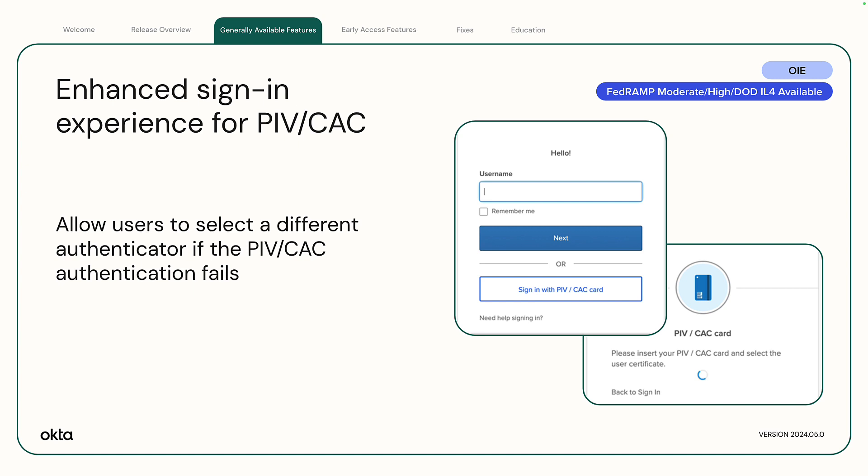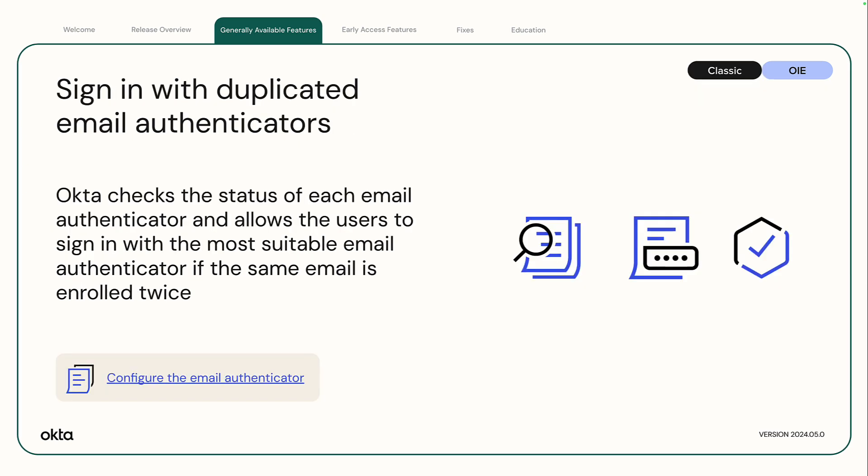Instead of forcing them to restart the sign-in process, if your org uses default error pages for PIV or CAC sign-in, the new experience is automatically enabled. If your org uses customized error pages for PIV or CAC sign-in, they are preserved. However, you need to contact support to switch to the new experience.